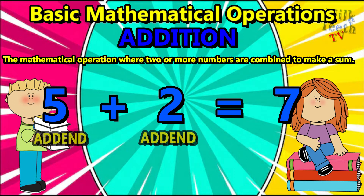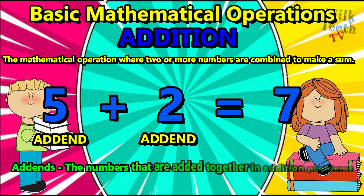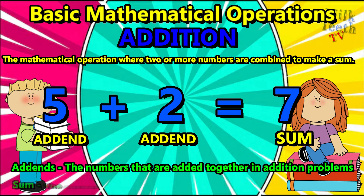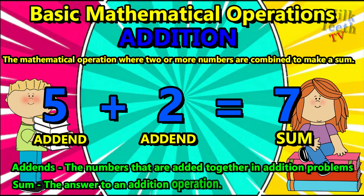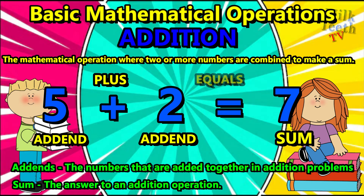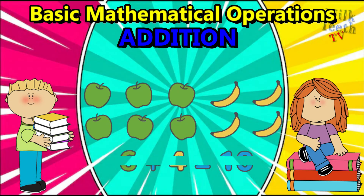Here, five and two are called addends — the numbers that are added together in addition problems. Seven is the sum or total, which is the answer to an addition operation. We use the symbol plus for addition and the symbol equals to represent the answer, which is the sum or the total.